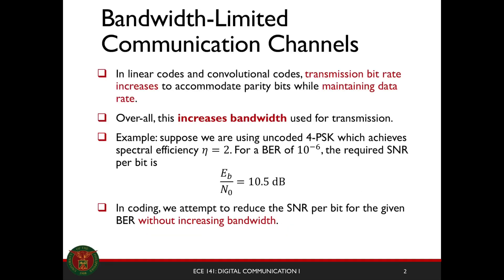So what is trellis-coded modulation? Let's recall our discussion on bandwidth-limited communication channels. If you have linear codes and convolutional codes, your transmission bit rate increases to accommodate your parity bits while maintaining the data rate. That's from this formula. Your data rate is a fraction of the transmission rate, because we're using extra bits for reliable communication. That means we have a reduced data rate when we compare it to transmission rate. So if you want to maintain the same data rate, we need to increase the transmission bit rate for us to have the same data rate and have reliable communication.